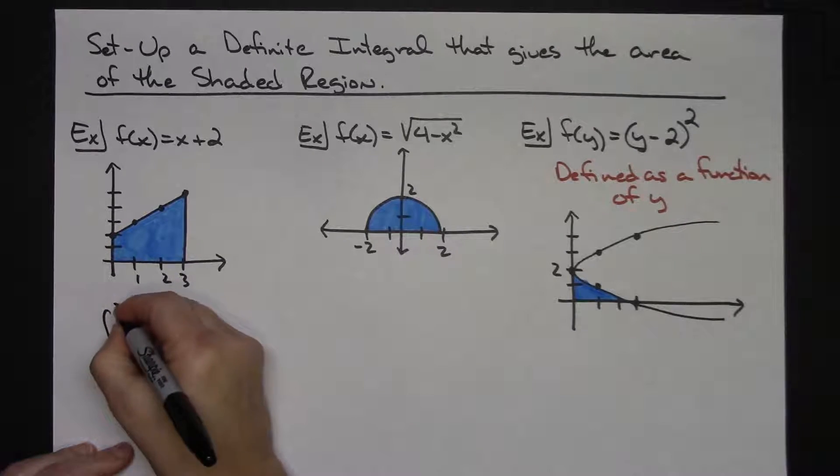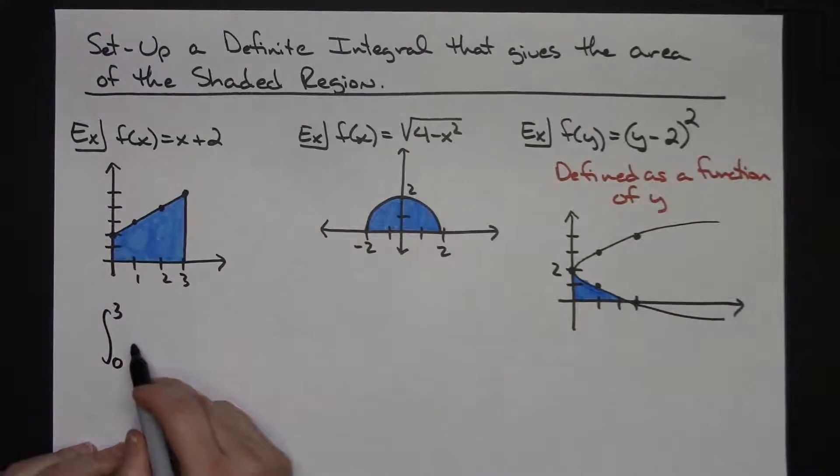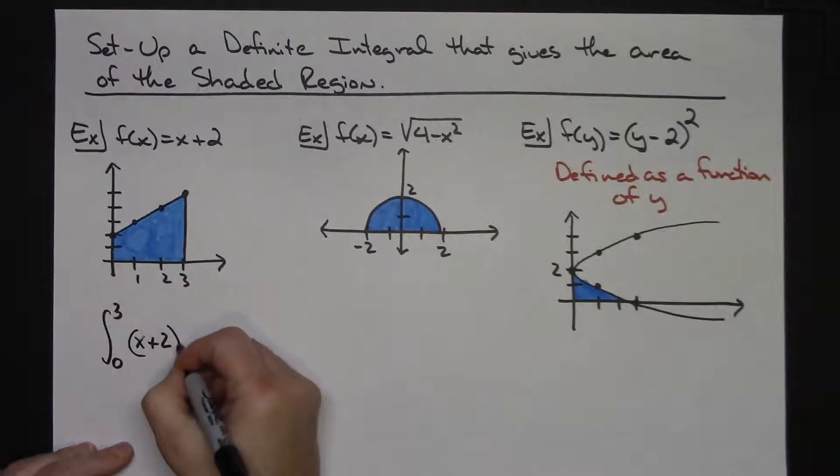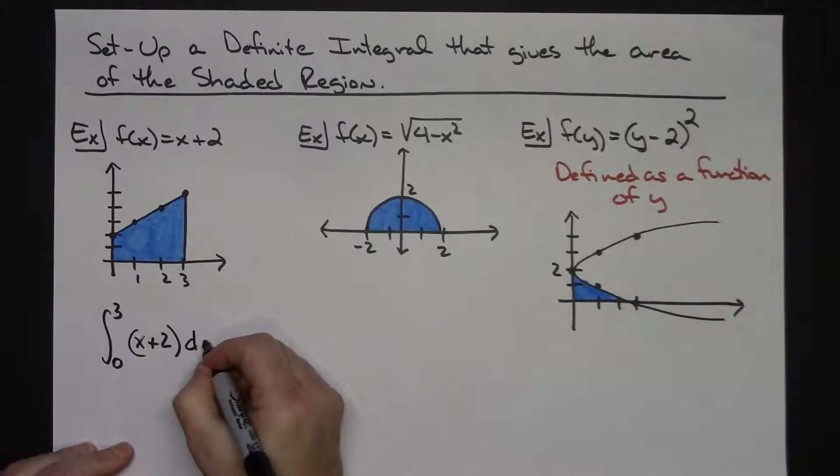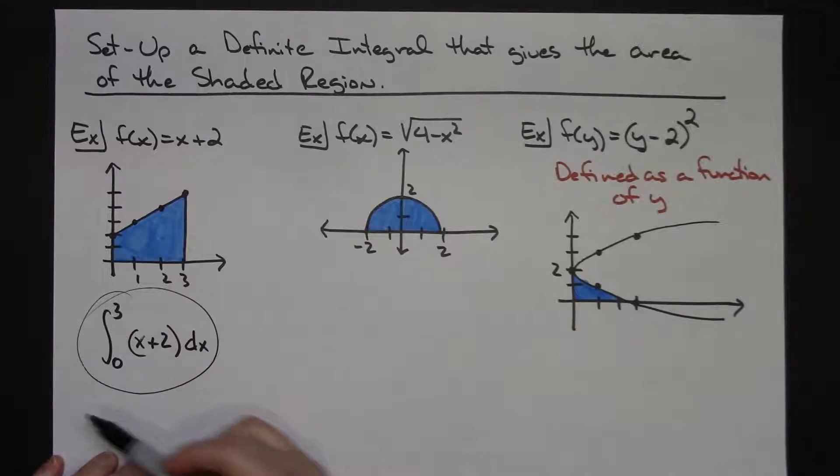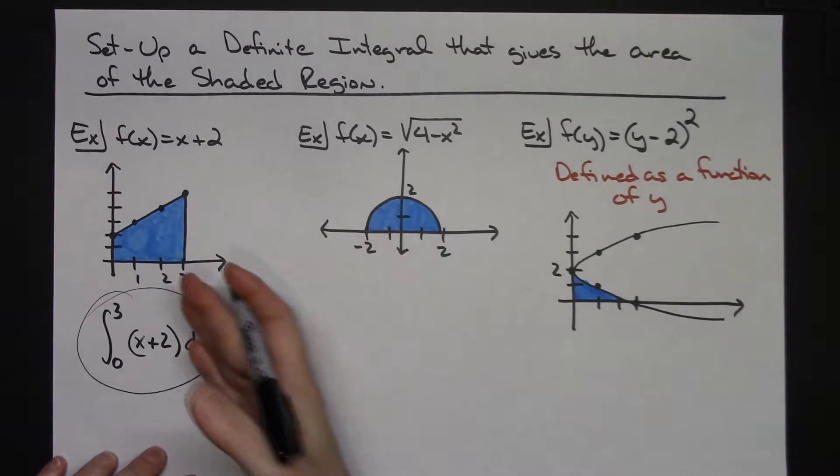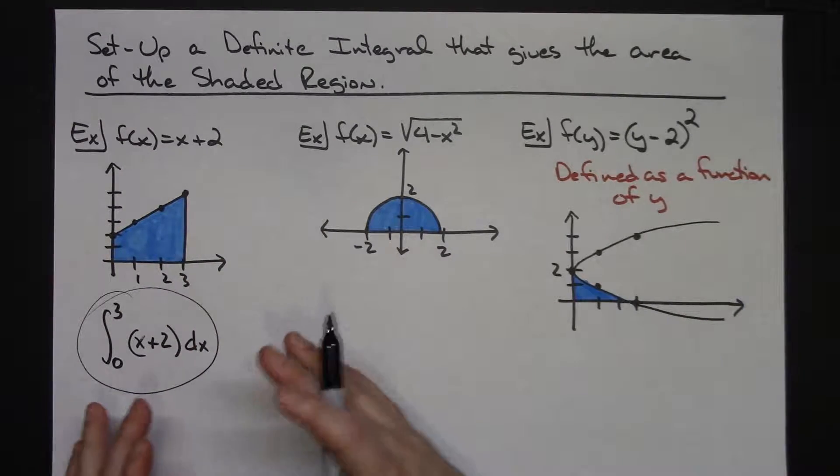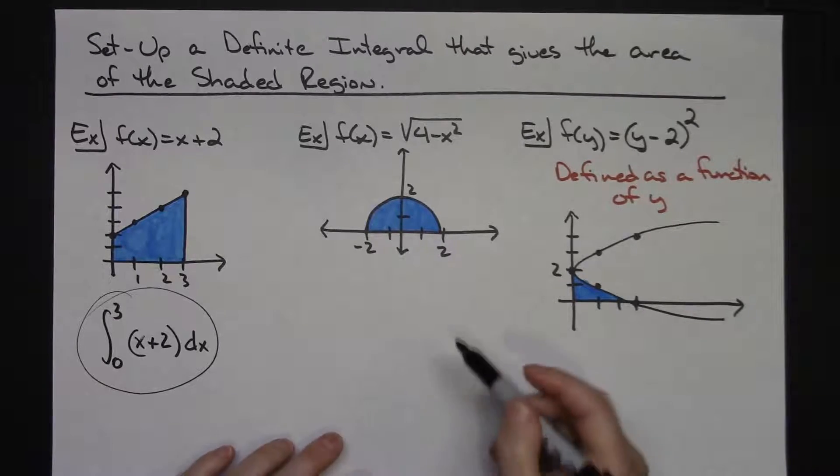So I know my integral is going to run from 0 to 3. Then always comes the function and then a dx, so my function is in terms of x and it's x plus 2, and then I add the dx, my variable of integration. So just simply setting up that definite integral from giving a function and the picture, trying to get you used to this idea of the area under a curve.